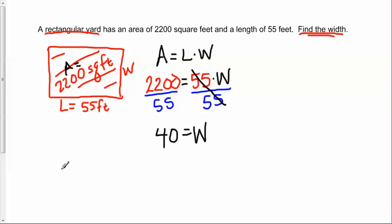And so we think that means the width—we always want to be sure that we answer the question clearly—the width of the yard, because we were talking about a yard, is 40 feet.